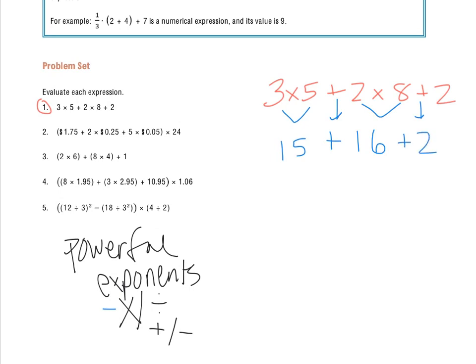I worked left to right. There's no more multiplication and division, so I move to addition and subtraction — again, whatever shows up first left to right. 15 plus 16 is 31, bring down plus 2, and then I can add those to get 33.